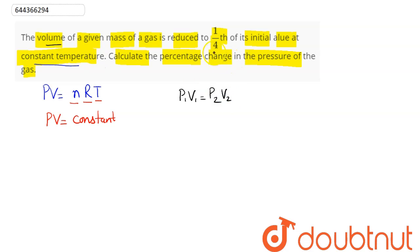So if initial volume is V₀, final volume is one-fourth of initial volume, that is V₀/4. Initial pressure is P₀, final pressure is Pf. V₀ cancels out, hence we can say final pressure comes out as 4P₀.